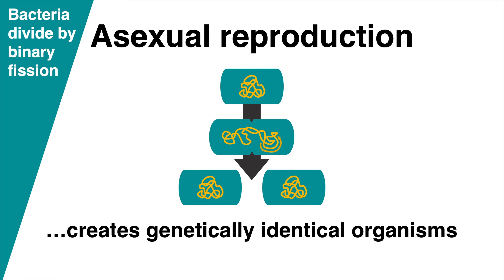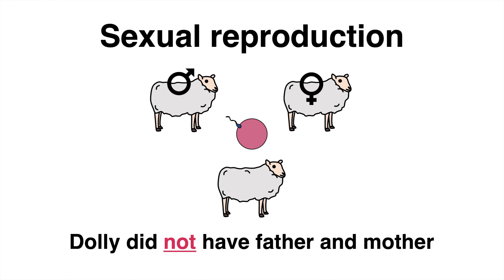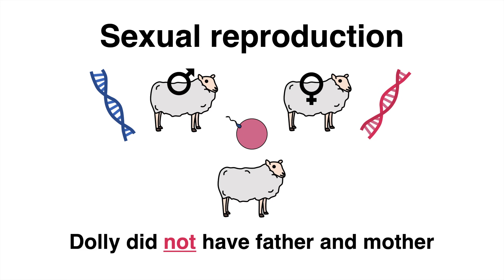Bacteria create a duplicate of their genome and divide by binary fission. The opposite of asexual reproduction is sexual reproduction, where the father donates sperm and the mother the egg cell. Each parent provides one copy of genetic information.